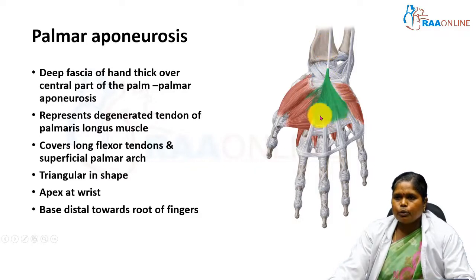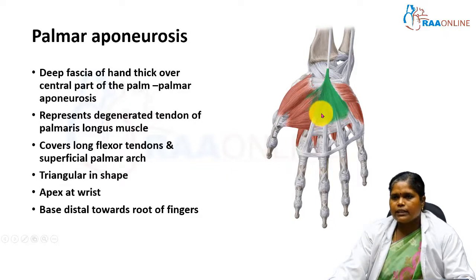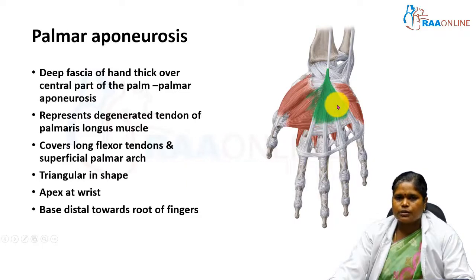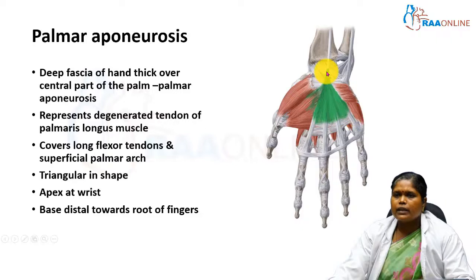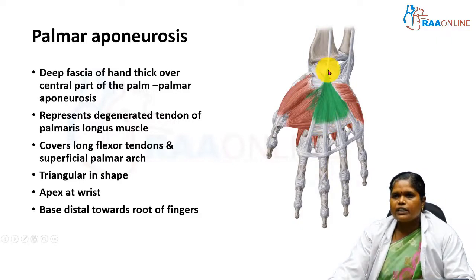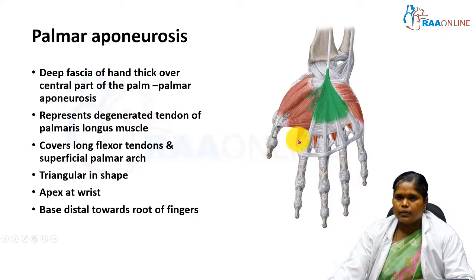The palmar aponeurosis covers the underlying long flexor tendons, blood vessels, and nerves. It is a triangular structure with the apex resting at the wrist and the base resting at the root of the fingers.